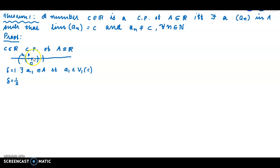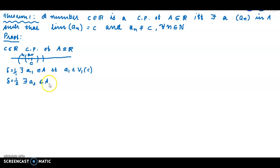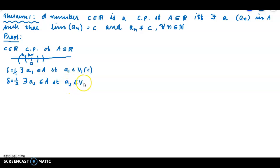A₁ is one point. For delta equal to 1/2, corresponding to A₂, there exist points in the neighborhood. We select a point A₂ in Vδ(c) for delta equal to 1/2, that is in V₁/₂(c).